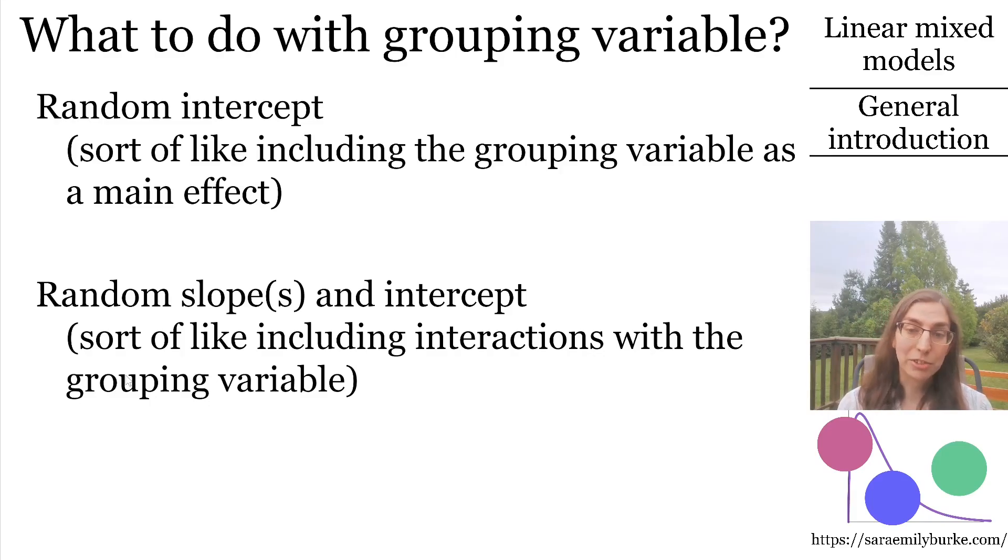There is a mean intercept and a variance among the intercepts, and for each term in the model, there is a mean slope and a variance among the slopes. And each observed intercept and each observed slope within levels of the grouping variable is the result of a random draw from those distributions.